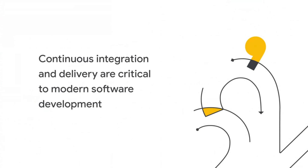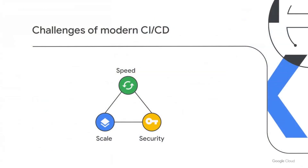Now of course, there isn't a one-size-fits-all approach to DevOps or CI/CD. Every organization is different, and there are several challenges that you may face as you modernize. One challenge you may face is how to balance speed, scale, and security. These are all important goals to design against, but they're all related to each other, and they can't be optimized in isolation.